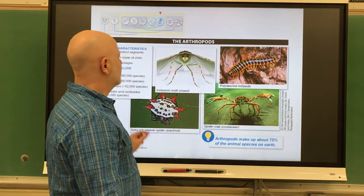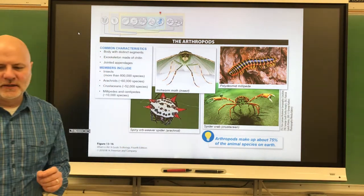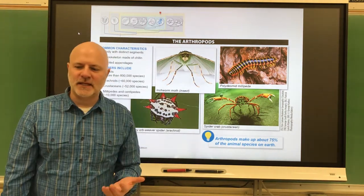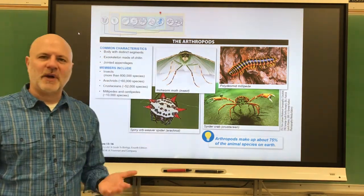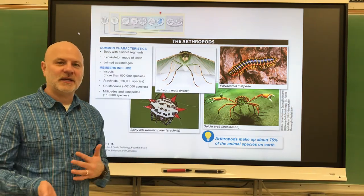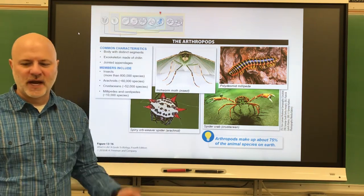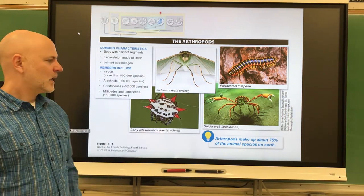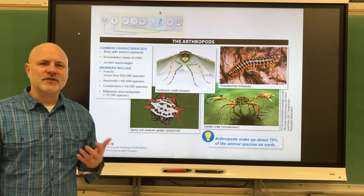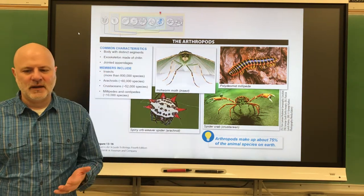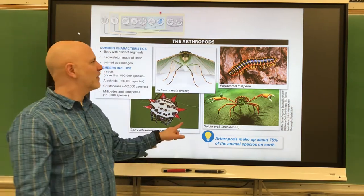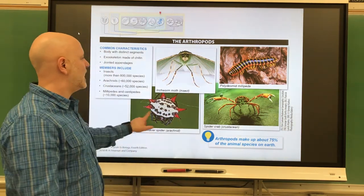Let's move on to arthropods. Arthropods include insects, crabs, spiders, millipedes, centipedes, ticks, horseshoe crabs, and all those things. These guys are coelomates and have a segmented body with three distinct areas.